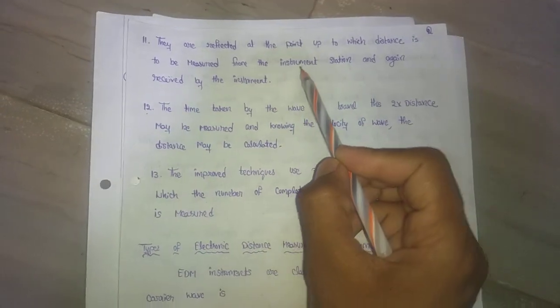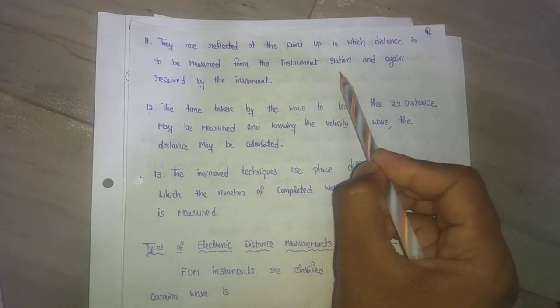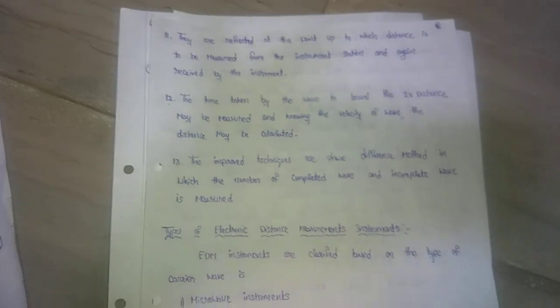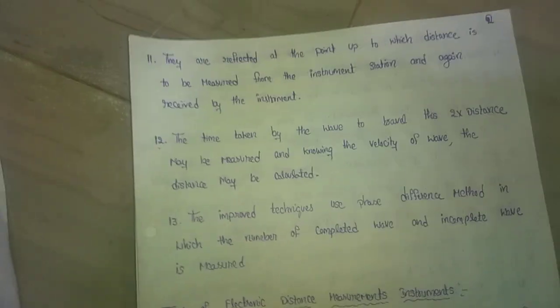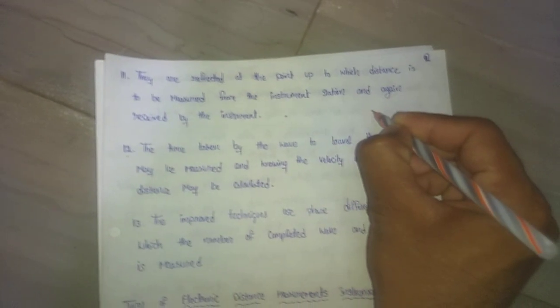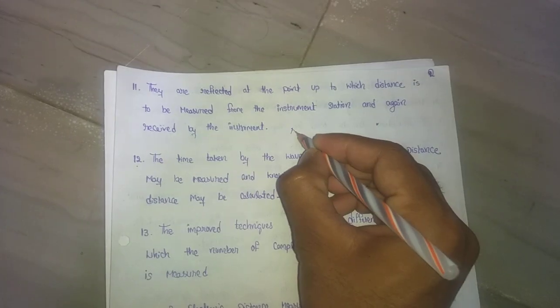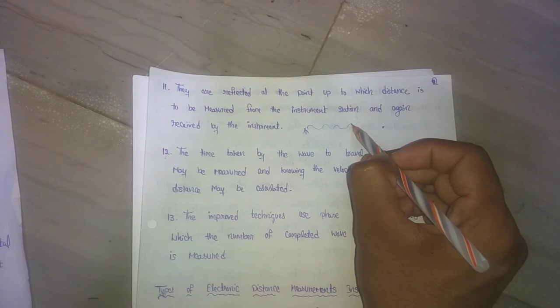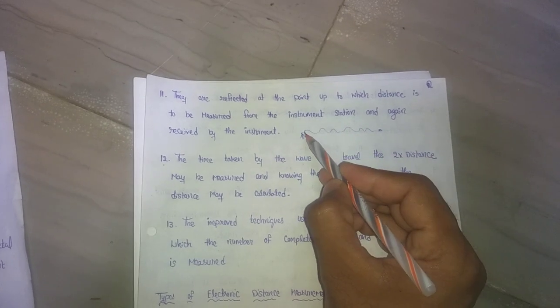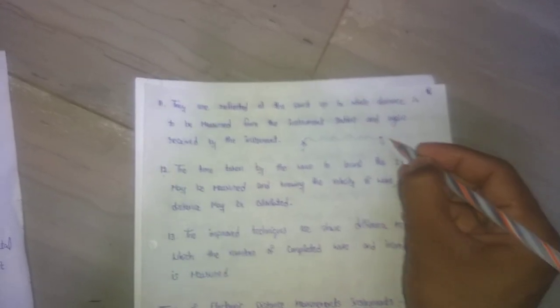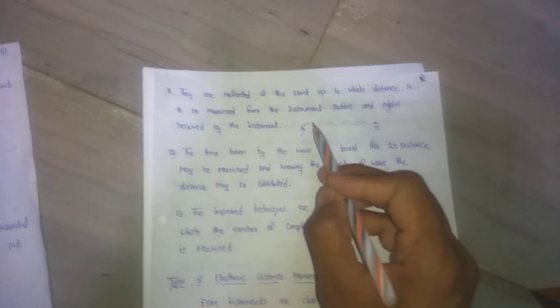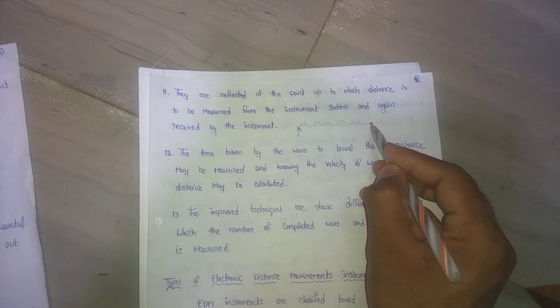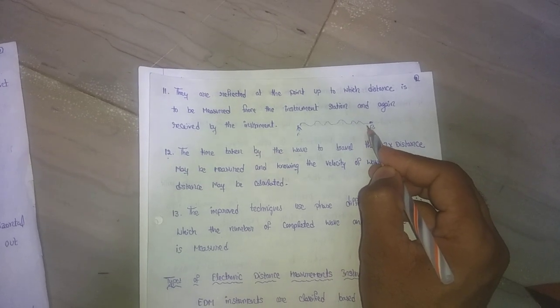The waves are reflected at the point up to which distance is to be measured from the instrument station, and again received by the instrument. From the starting point, we generate waves and transfer them to the target point. At the endpoint, there is a prism - a reflector.